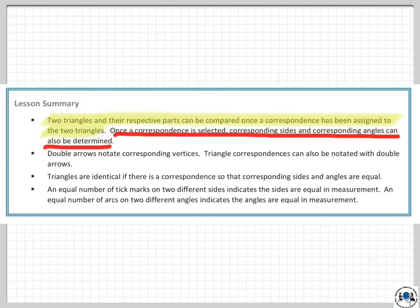Double arrows, those double arrows that we've been using, they notate corresponding vertices. Triangle correspondences can also be notated with double arrows. And again, that's this right here, and again, that does not mean equal to. It does not mean equal to, it just means corresponding to.